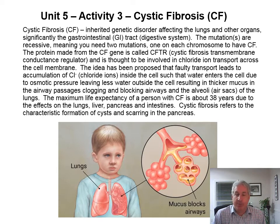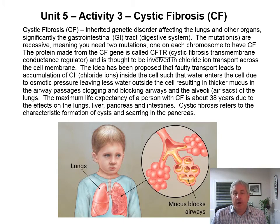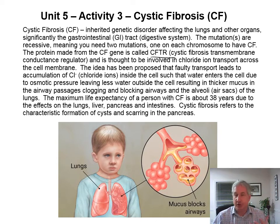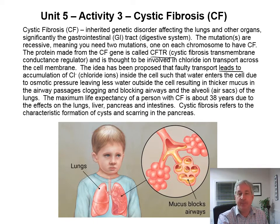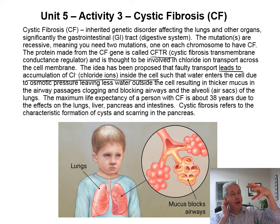The proposed mechanism involves a transport molecule in the cell surface that transports chloride ions from inside the cell to outside. This transport molecule is called the CFTR molecule — the cystic fibrosis transmembrane conductance regulator. Faulty transport leads to accumulation of chloride ions inside the cell, so water enters the cell due to osmotic pressure, trying to equalize the chloride ion concentration.